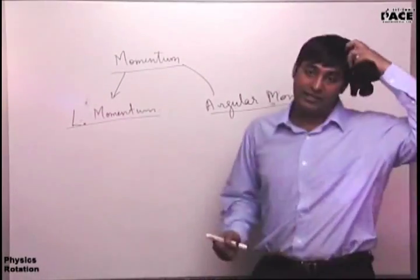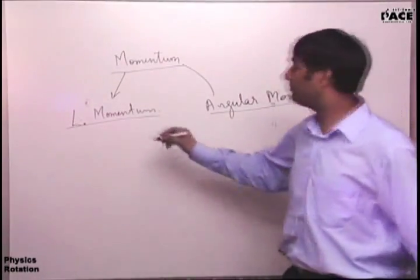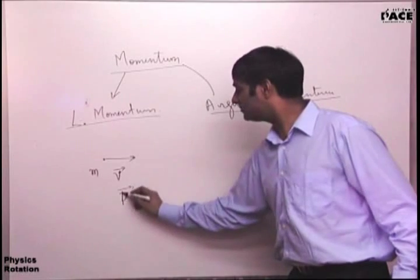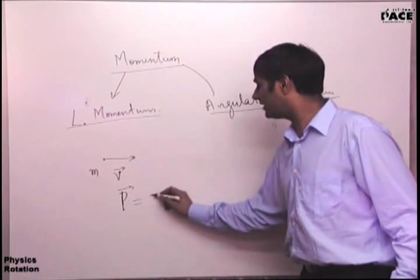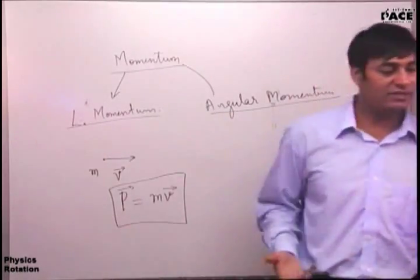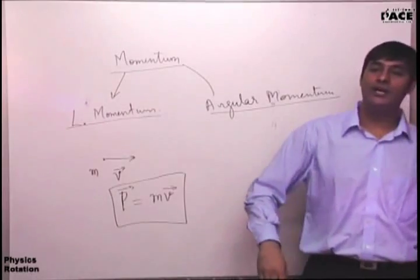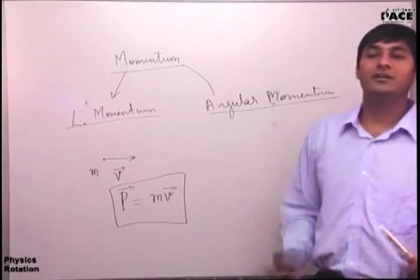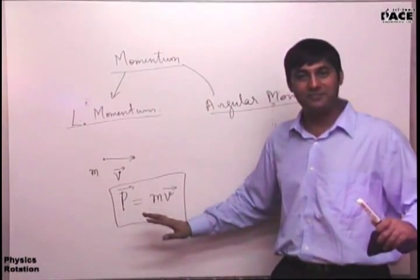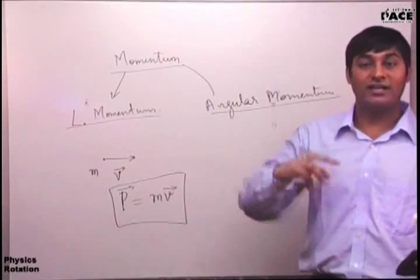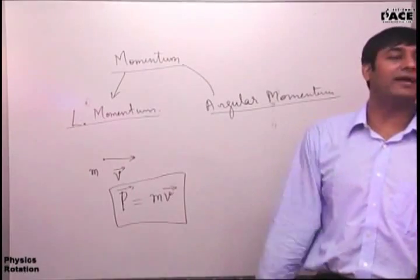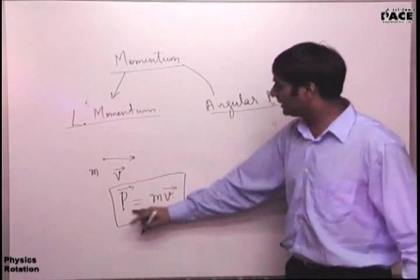Linear momentum of a point mass m moving with a velocity v is defined as p = mv. P is the symbol generally used to denote mv - the product of mass and velocity. Why is it not mv squared, mv cubed, mv/2, or m²v? Because this is a measure of inertia of the system, and the rate of change of momentum gives us the force acting on the system.